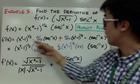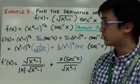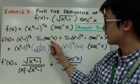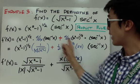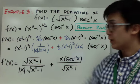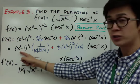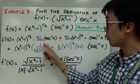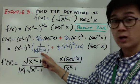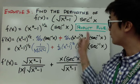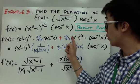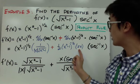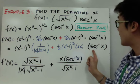Using the product rule, f prime of x is equal to: copy f of x times the derivative of g of x, plus the derivative of f of x times g of x. The derivative of secant inverse x from the formula is 1 over the absolute value of x times the square root of x squared minus 1. Plus the derivative of the first term using chain rule: one half times x squared minus 1 raised to negative one half, times the derivative of the inside which is 2x, multiplied by secant inverse x.